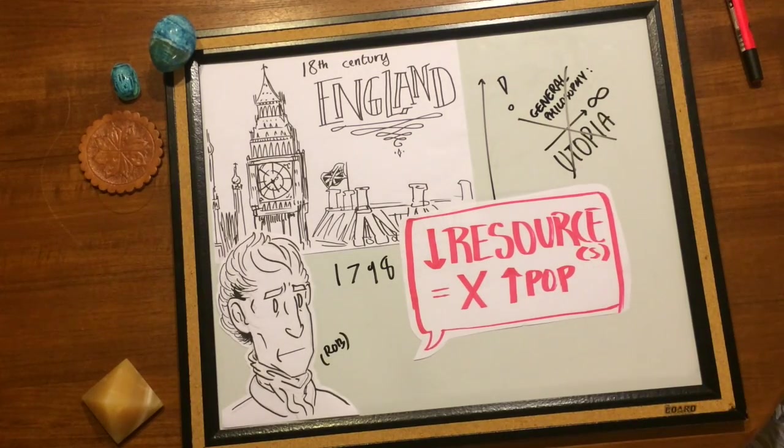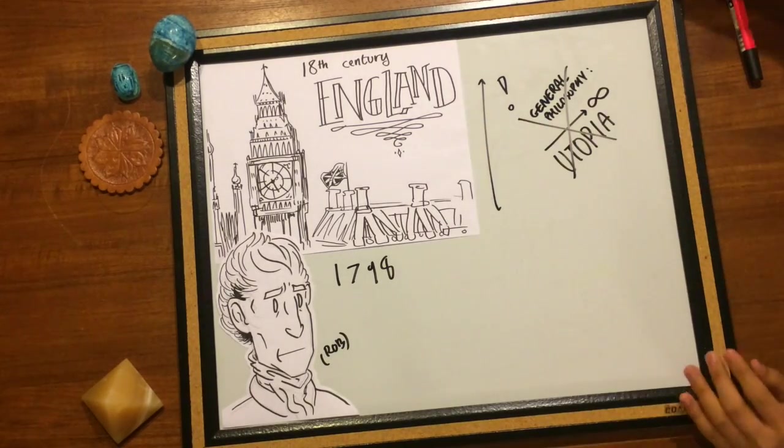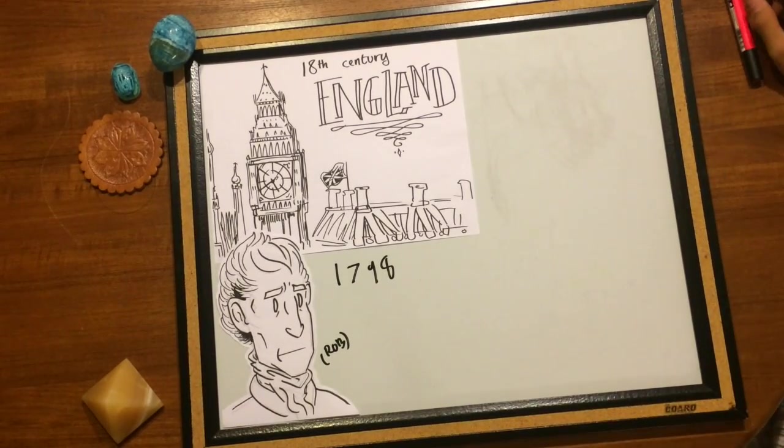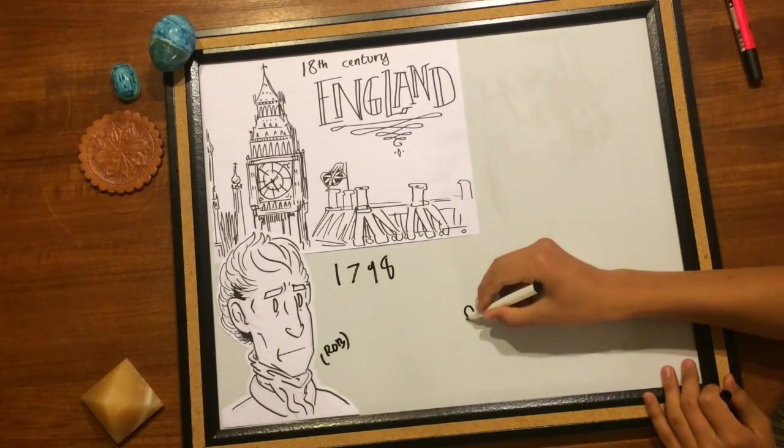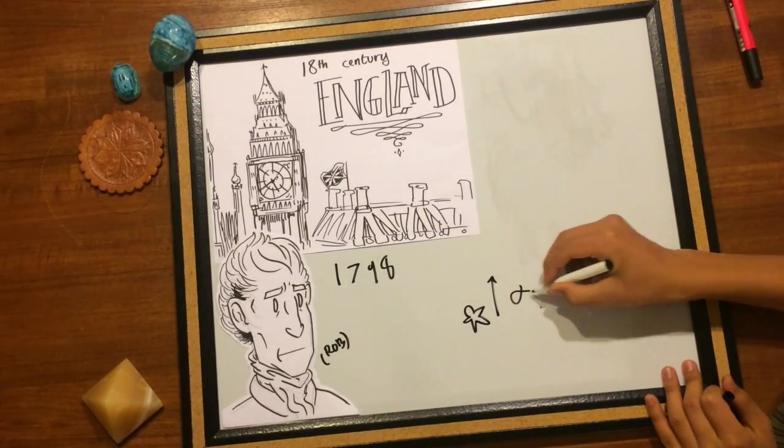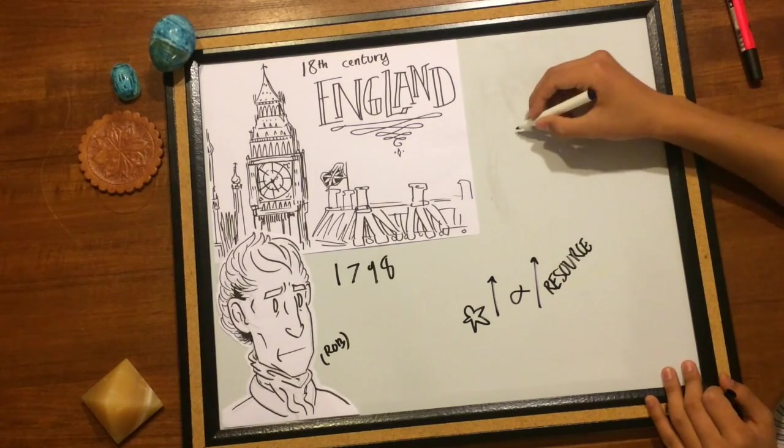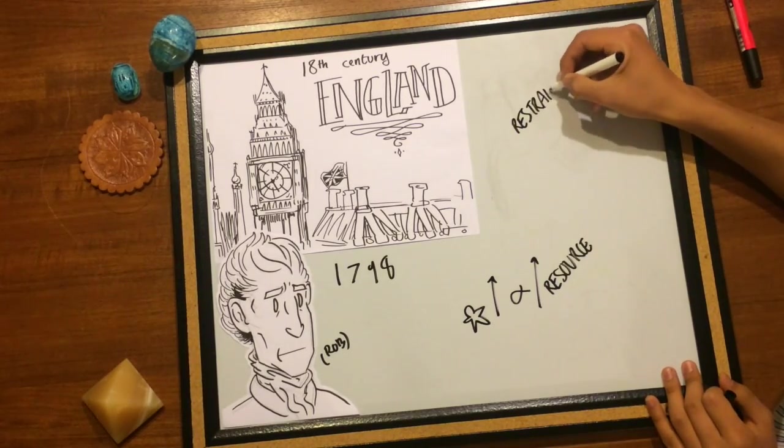He theorized that the increase of population is necessarily limited by the means of subsistence, that population does invariably increase when the means of subsistence increase, and that the superior power of population is repressed by moral restraint, vice, and misery.